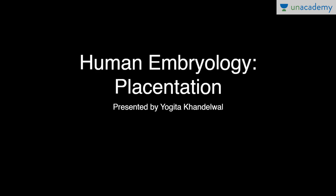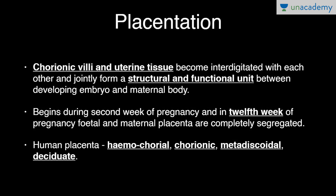In this lesson we will talk about placentation from the topic human embryology, presented by Yogita Khandelwal. Chorionic villi and uterine tissue become interdigitated with each other and jointly form a structural and functional unit between the developing embryo and maternal blood, which is called placenta. Chorionic villi form the fetal placenta and uterine tissue forms the maternal placenta.